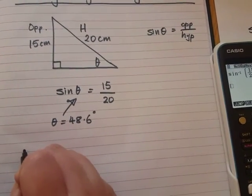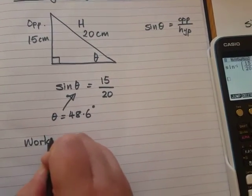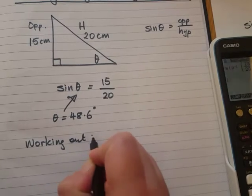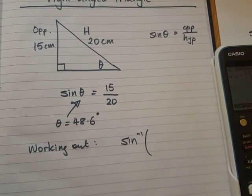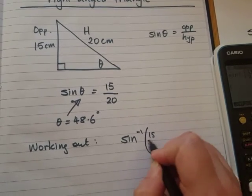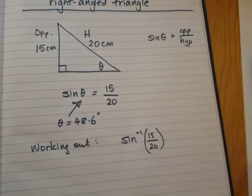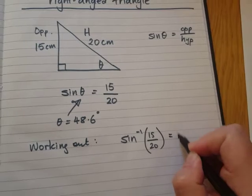So in your working out, you should write this. You would write sine inverse bracket 15 over 20. And then you would write the angle that it equals.